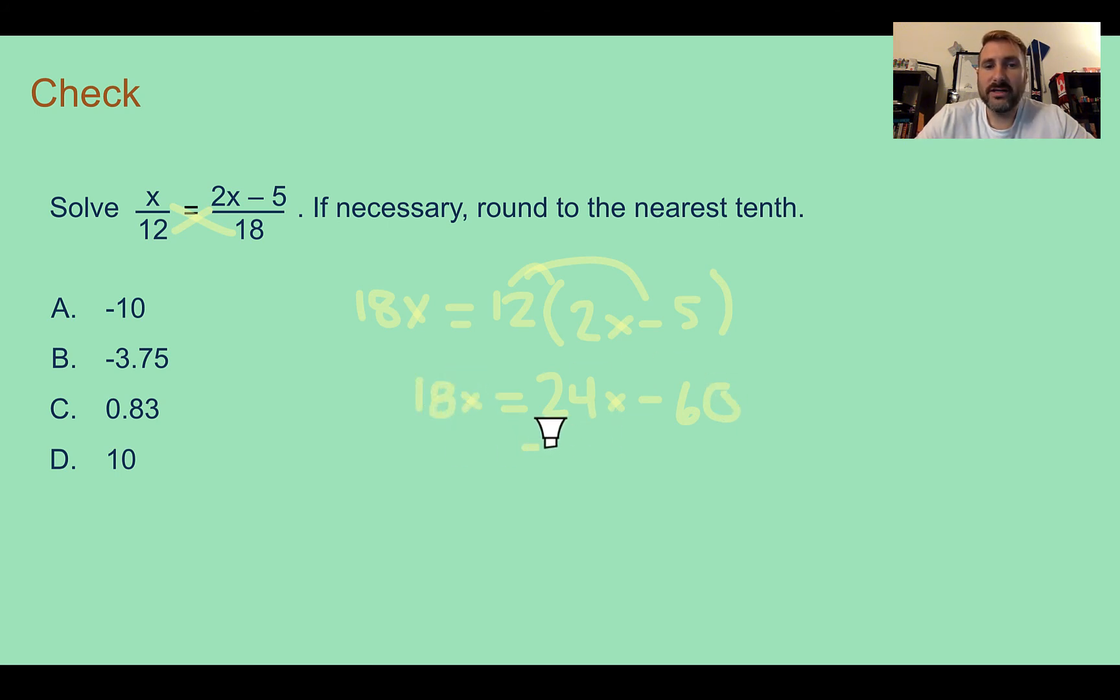This time, I need to subtract 24x. Even though it's going to put my total negative, I'm subtracting that because my constant is over here. So negative 6x equals negative 60. Then finally, dividing by negative 6, I would end up with x equals 60 divided by 6 is 10. And then a negative and another negative make this positive 10. So D.